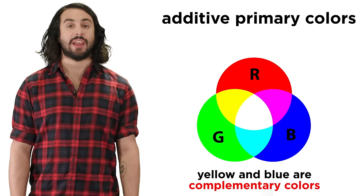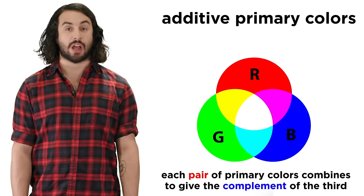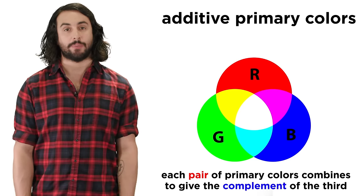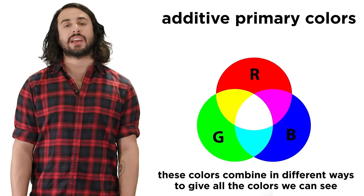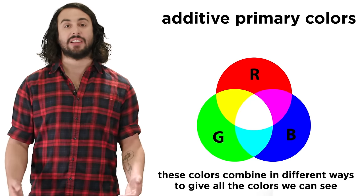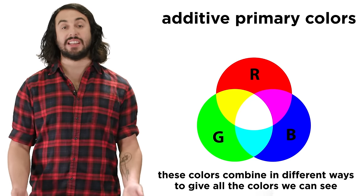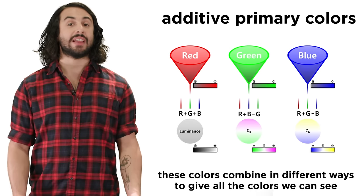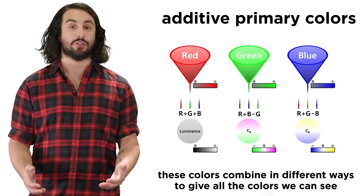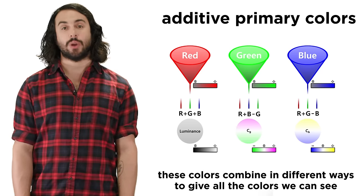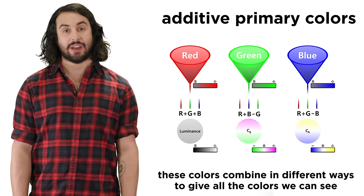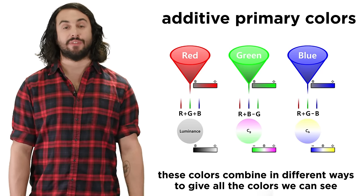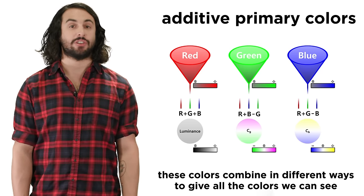In this way, each pair of primary additive colors combines to give the complement of the third. It is the combination of these colors that allows us to see all the others, because our eyes have three kinds of color receptors, each of which is sensitive to red, green, or blue light, which can be stimulated in various combinations.